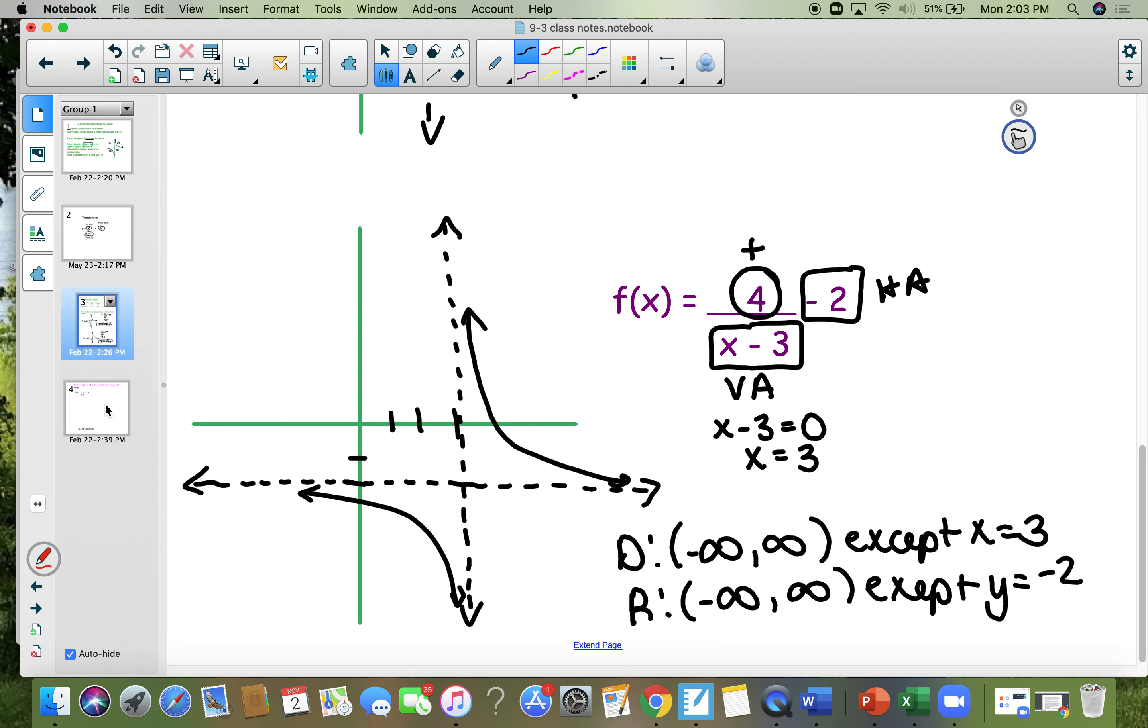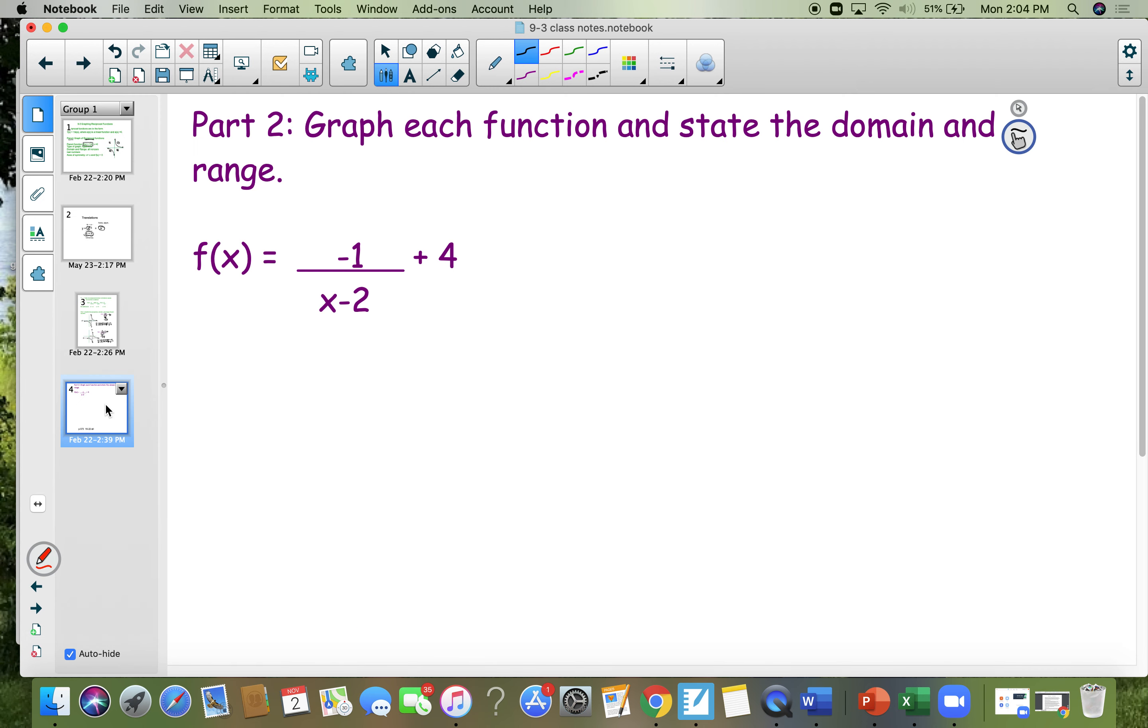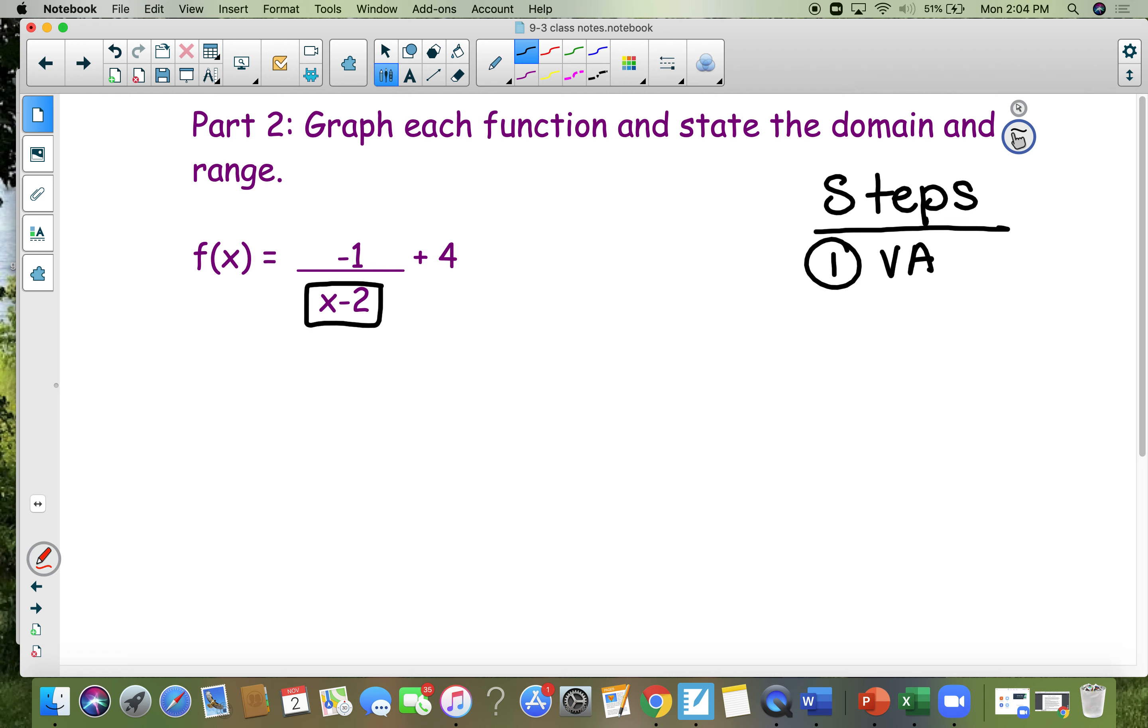I'll put the steps over here. Steps. First thing, locate your VA, your vertical asymptote, right here. It's in the denominator. All you're going to do is set it equal to 0 and solve for x. So you have a vertical asymptote at x equals 2. Right here.